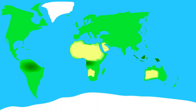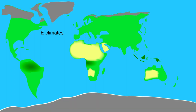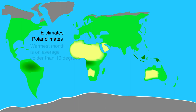When it is also cold in the summer then we are dealing with E climates. These are climates that occur near the north and south pole, and therefore we call them polar climates. The limit in these climates is in the hottest month — it can be up to 10 degrees on average. If it is warmer in the hottest month, then it is a D climate.